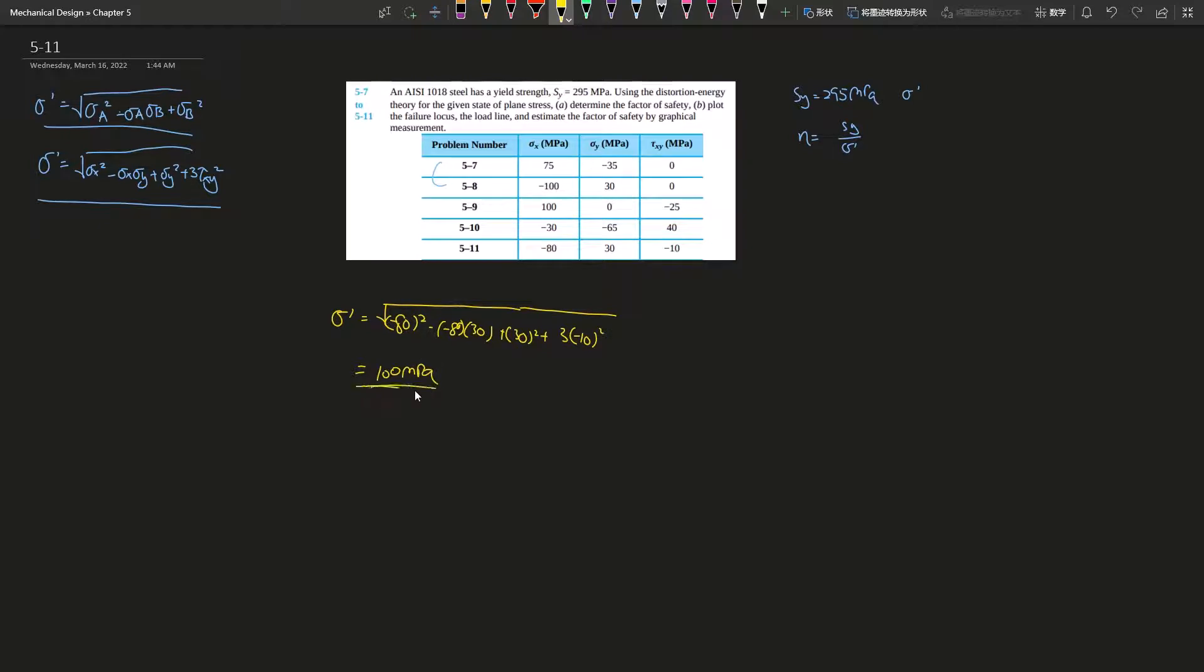So the factor of safety is 295 divided by 100. Everything is in megapascals so no worries—2.95. That's the factor of safety from calculation.